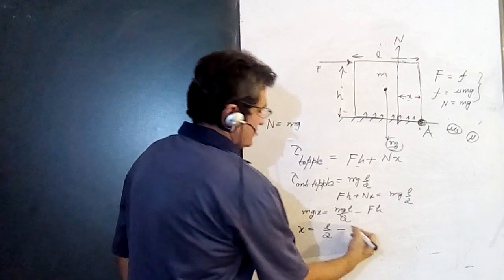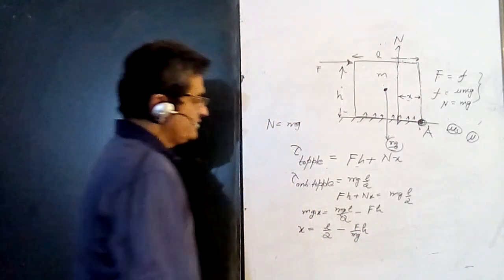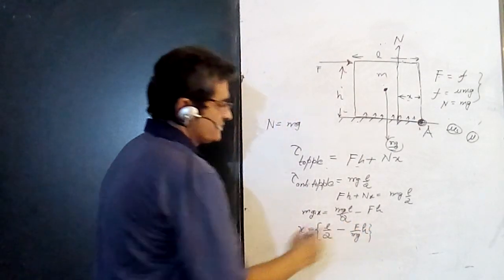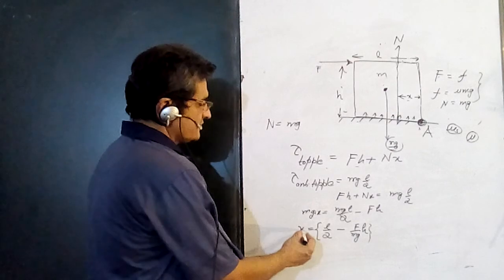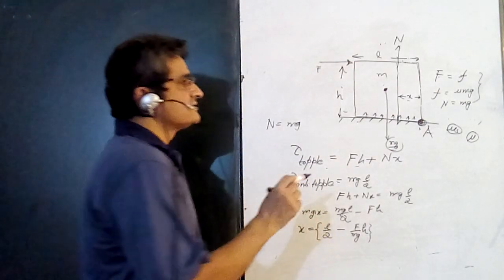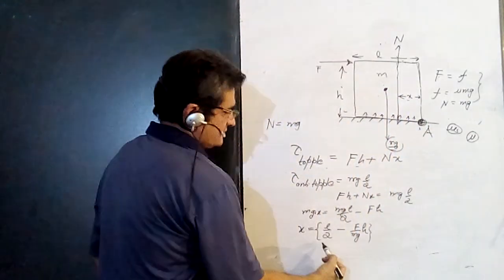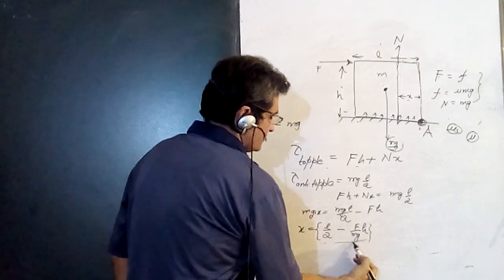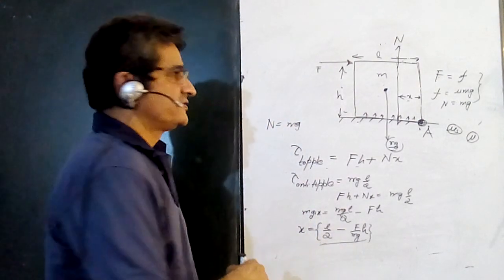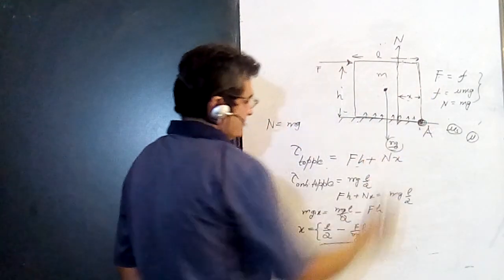Solving for x: N·x = mg·L/2 − F·H, so x = L/2 − (F/mg)·H. This is the combination of various dimensions and forces determining the location of N. Importantly, x is always less than L/2, so x remains on that side of center.